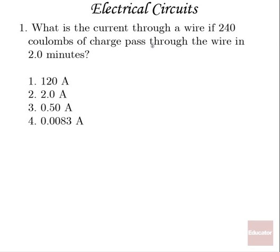Number one: What is the current through a wire if 240 coulombs of charge pass through the wire in two minutes? Well, current is going to be charge divided by time, or 240 coulombs over our time two minutes is 120 seconds, which is going to be just 2 amps. So our correct answer is number two.